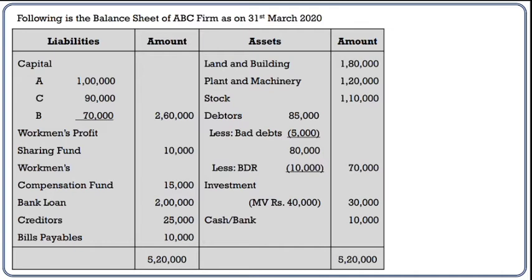On the asset side, old goodwill is not given in this example. For other asset components, we take market value if given; otherwise, book value.